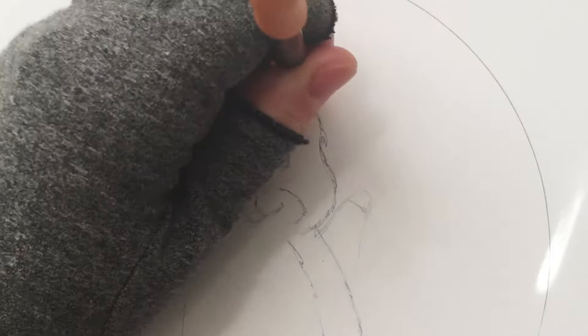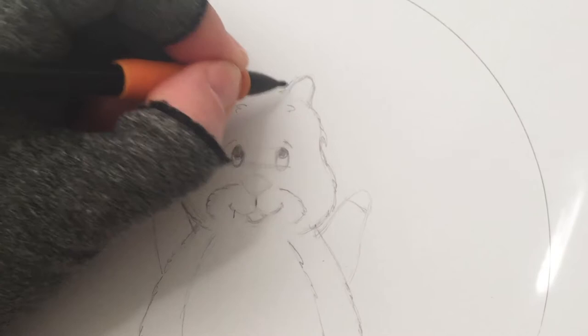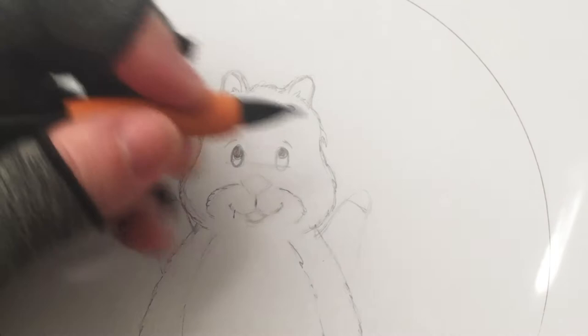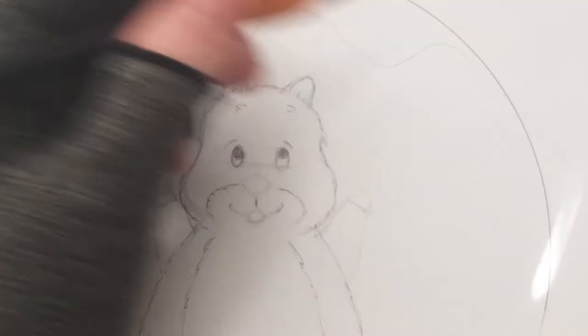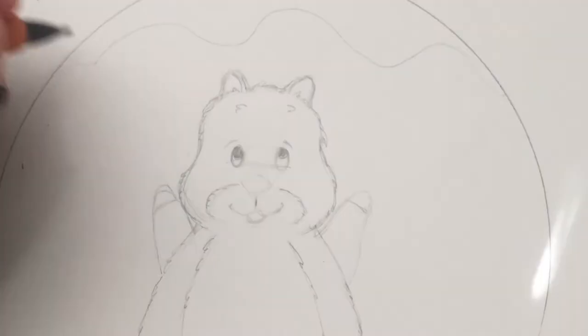Here I do some little fluffy lines by the ears and the forehead to add some character to this little hamster. Now let's add a wavy line above the hamster's head for those dangly lights which the hamster is trying to reach.